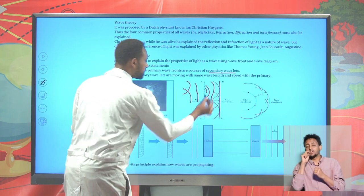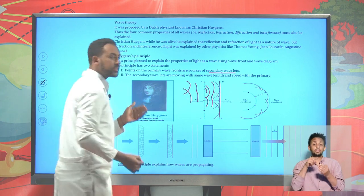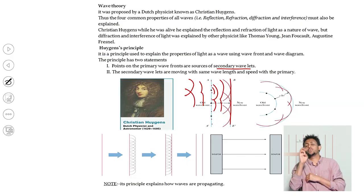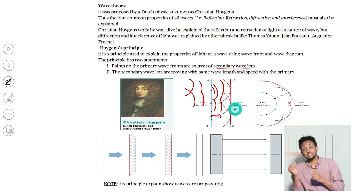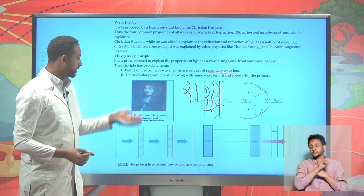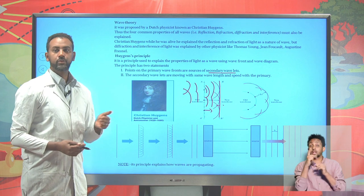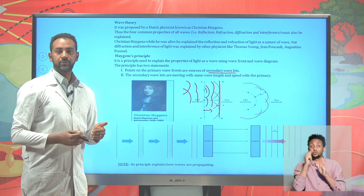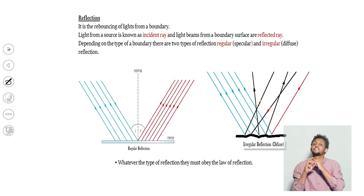The secondary wavelets move with the same wavelength, frequency, and speed as the primary wavelets. The primary and secondary wavelets have the same frequencies — keep this in mind, as it is a very important law used to prove reflection, refraction, and so on.